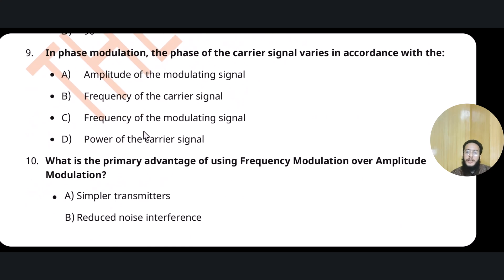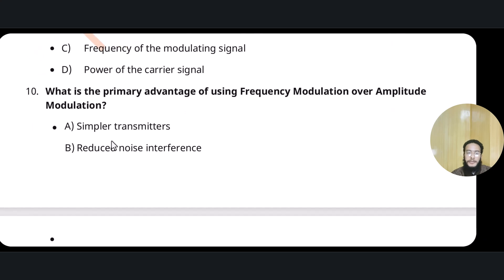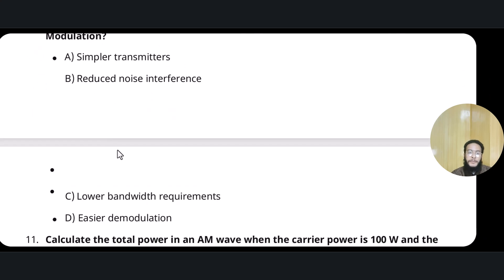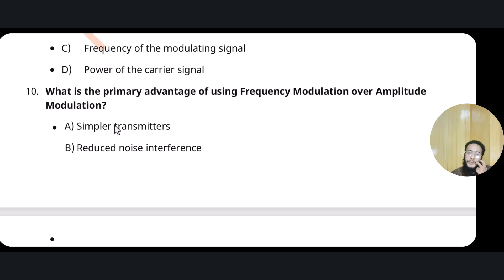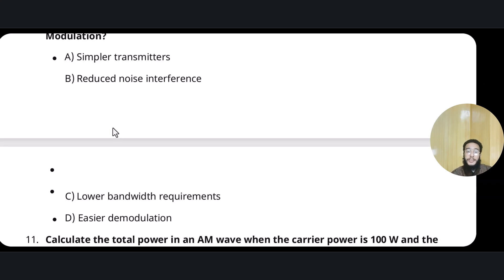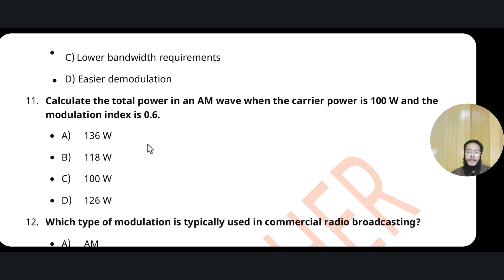In phase modulation, when we vary the phase, we always vary it according to amplitude. Similarly, in frequency modulation, we vary frequency according to amplitude. Question 10: What is the primary advantage of using frequency modulation over amplitude modulation? As mentioned, AM has high noise susceptibility, so we use FM to reduce noise interference.